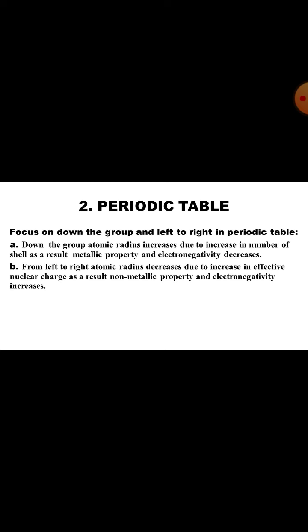Down the group, atomic radius increases due to increase in number of shells. This increases metallic properties and decreases electronegativity.